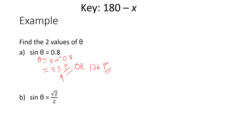For question two, sine theta equals square root of 2 divided by 2. Same approach: bring theta over, so theta equals inverse sine of (√2 ÷ 2). Key this into your calculator and you should get theta equals 45 degrees, or it can also equal 135 degrees.